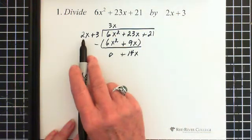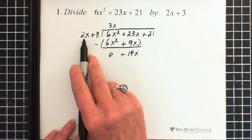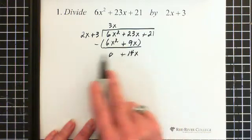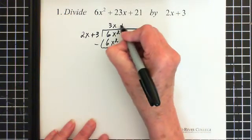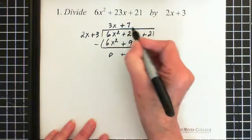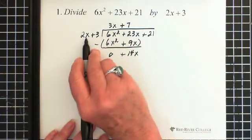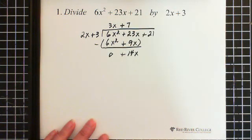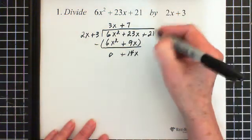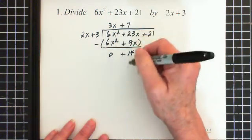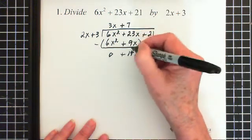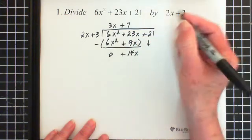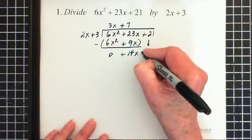Now what we do is we ask ourselves, what do we multiply by 2x to get 14x? And that would be a plus 7. So plus 7 multiplied by 2x is 14x. Oh, I just forgot a step. This piece has to come down. So as soon as we do this subtraction, what we need to do, and what I did not do, is bring down this plus 21.